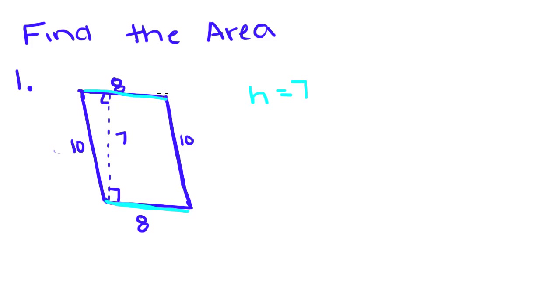But since in a parallelogram, opposite sides are congruent, it doesn't matter. So our base is eight. So the area of this parallelogram is seven times eight, which is going to give us 56. And there aren't units on this one, but say they told us that these were in centimeters, our area would be 56 centimeters squared.